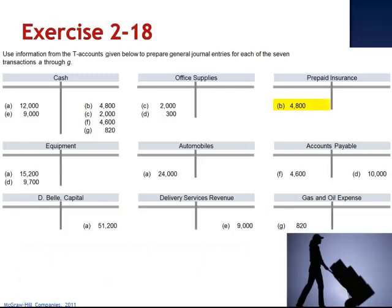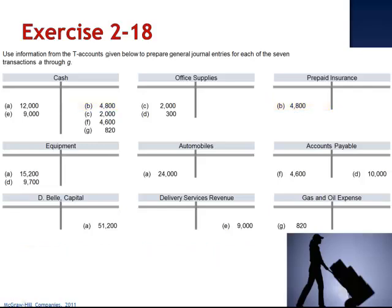Letter B includes a debit to prepaid insurance and a credit to cash for $4,800. The company paid $4,800 in cash in advance for insurance coverage.